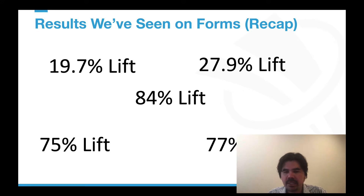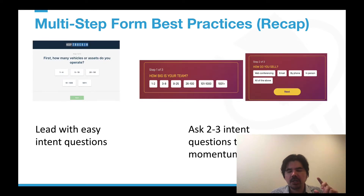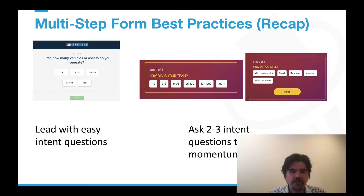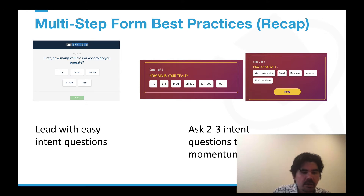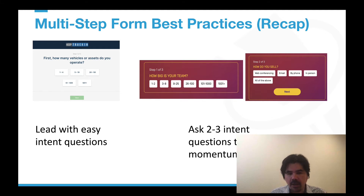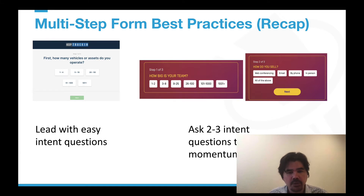When it comes to forms and the form technique in general, a couple of key takeaways — and we go into much more depth in the earlier videos. First, you want to lead with easy intent questions. Most static B2B forms ask for first name, last name, email address — what I call 'what's in it for the company' questions. With the multi-step form experience, you want to lead with intent questions that are more about what's in it for the user: what features they care about, how big their company is, what their role is. Asking easy-to-answer intent questions helps guide them toward a better outcome. Second, ask a couple of those questions first to make it easy for them to get started, build momentum and commitment to completing the process — that's how you get higher form conversion rates.